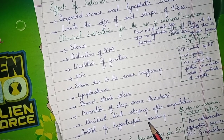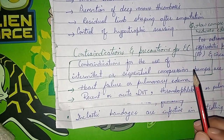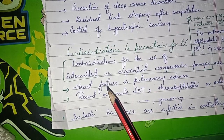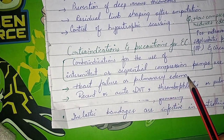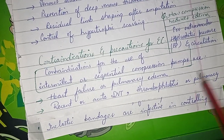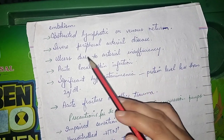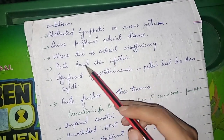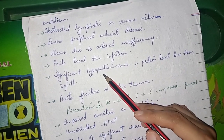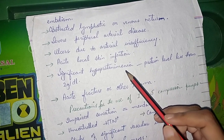Further indications include residual limb shaping after amputation and control of hypertrophic scarring. Contraindications — conditions where we cannot use compression bandages — include: heart failure, pulmonary edema, recent or acute DVT, thrombophlebitis, pulmonary embolism, obstruction of lymphatic or venous return, severe peripheral arterial disease, ulcer due to arterial insufficiency, acute local skin infection, significant hypoproteinemia (protein level less than 2 g/dL), acute fracture, and other trauma.